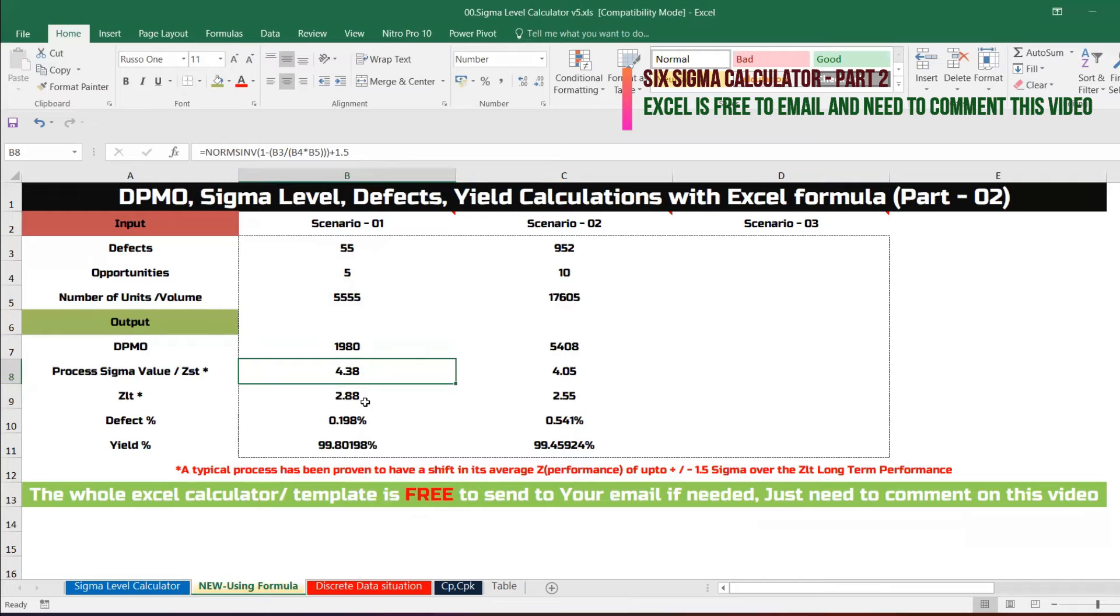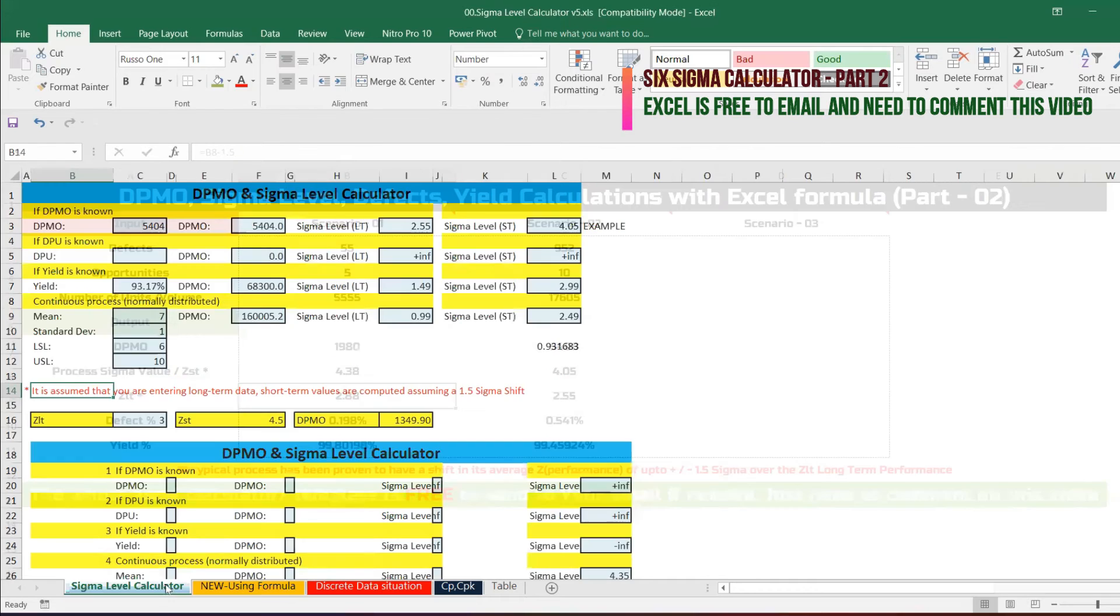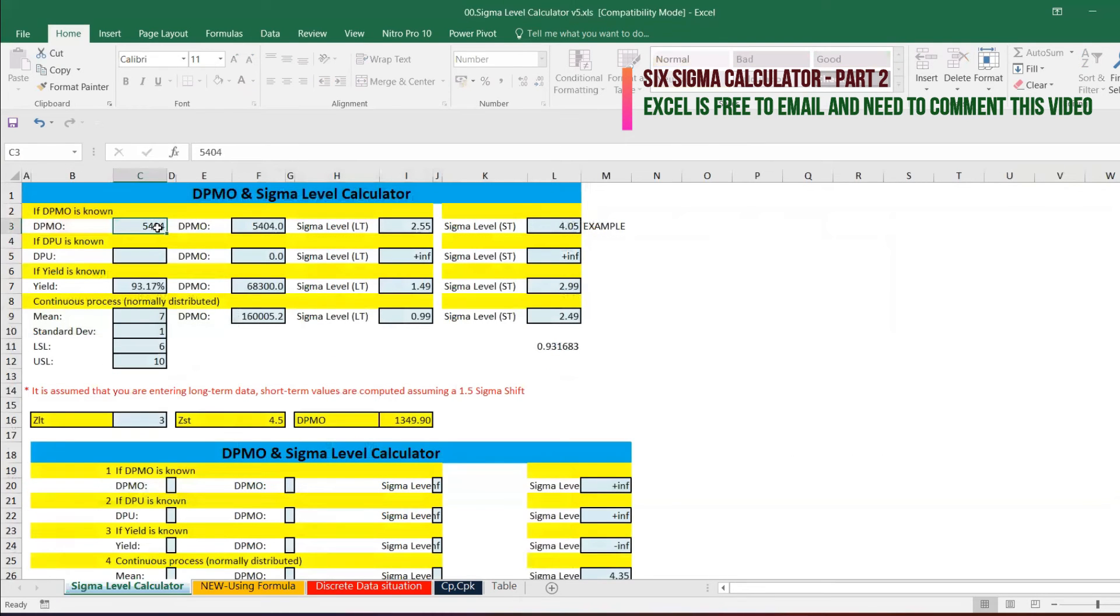When you say long term, you will just minus the 1.5. Either you can, when you know the long term performance, let's say 2.88, you can add 1.5 to make it short term, or when you know the short term you can make it long term as well. Let's quickly check this value 1980.